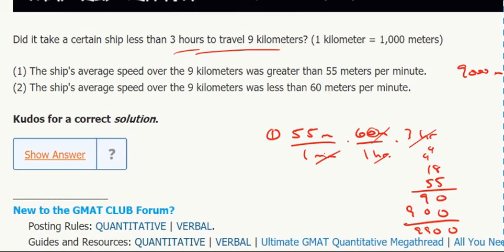So if it had done 55 meters per minute for three hours, it would have gone 9,900 meters, which is greater than 9,000. And the speed was greater than that, so that's sufficient.